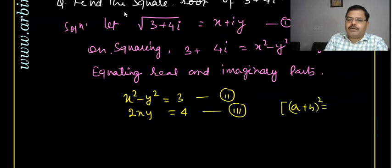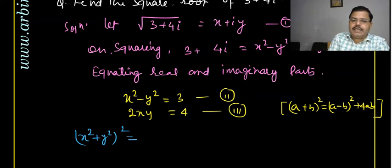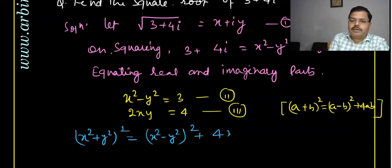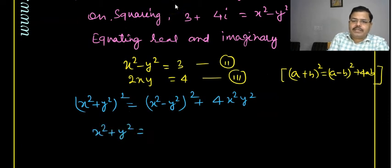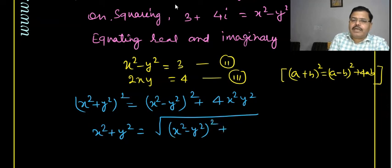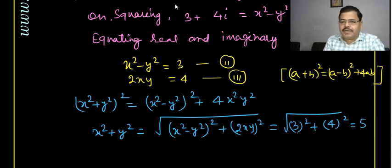Now we use the formula (a+b)² = (a−b)² + 4ab. Applying it here, x²+y² = √[(x²−y²)² + (2xy)²]. Putting the values, that is √(3² + 4²) = √(9+16) = √25 = 5. So x²+y² = 5.